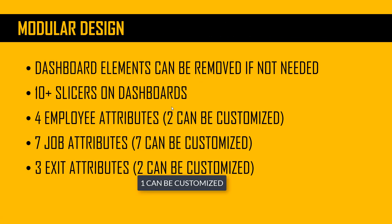The template has also been designed to be modular, which allows you to customize it to fit your needs. Dashboard elements can be removed, slicers can be renamed, and you have employee attributes, job attributes, and exit attributes. There are totally 14 different attributes, and out of those, 11 can be fully customized — renamed by you and used for any purpose as you need. This design allows the retention dashboard to be completely your own organization-specific dashboard.